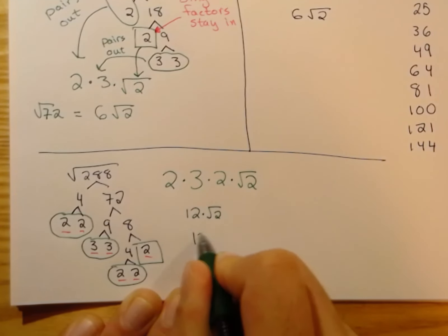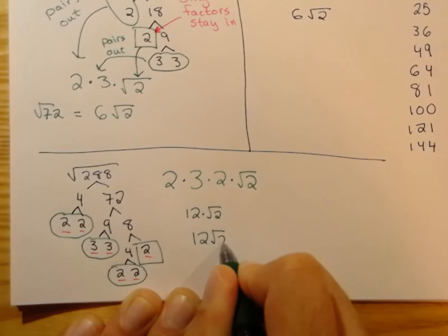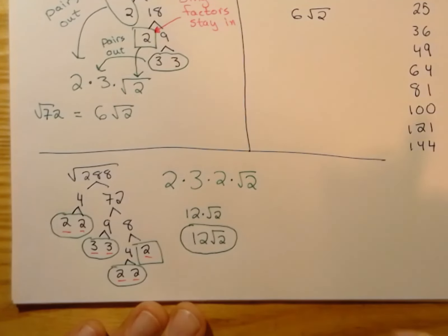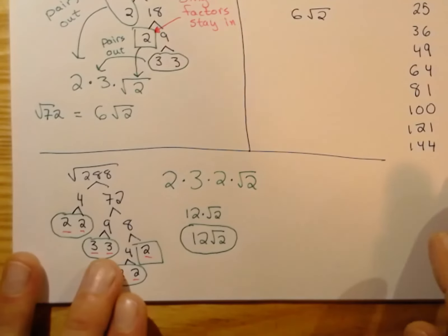You don't actually need to write that dot. I just wanted to reiterate that it's multiplication. You can just write it like that. Multiplication is implied.